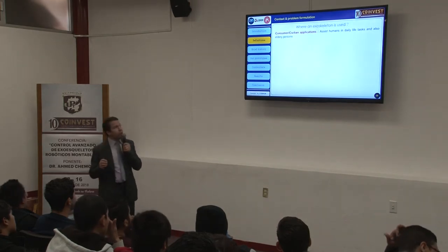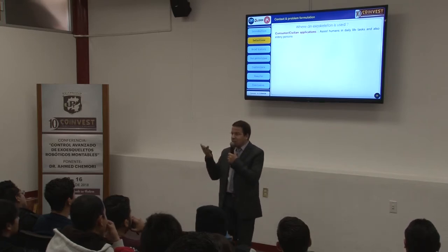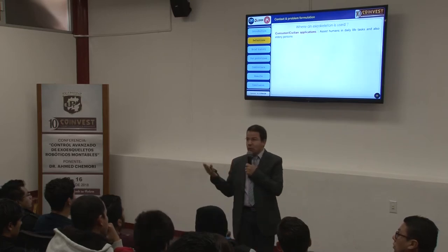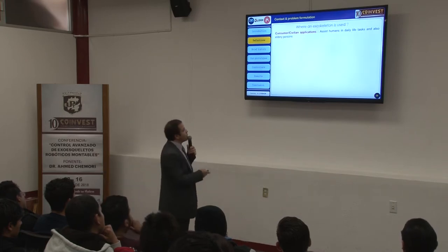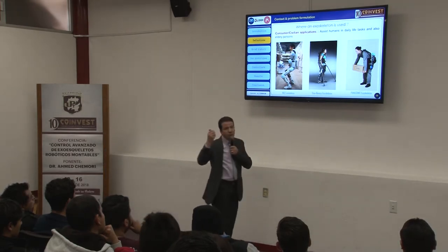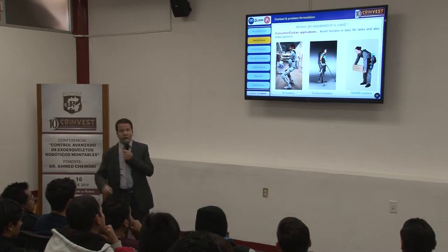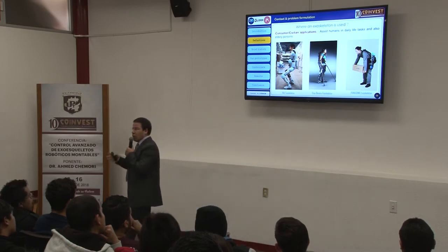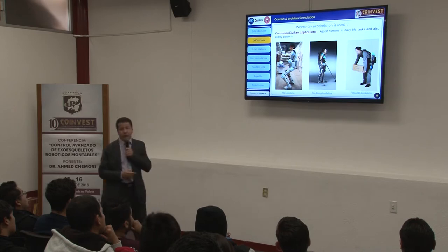Another application is civilian. This is mainly for elderly persons who may not have very powerful muscles due to age. To help them, we can use exoskeletons — they can buy some to use at home to perform daily tasks. These exoskeletons are lightweight; for example, the first one weighs only 10 kilograms, is commercialized, and can be used to lift objects or help a person walk or exercise.